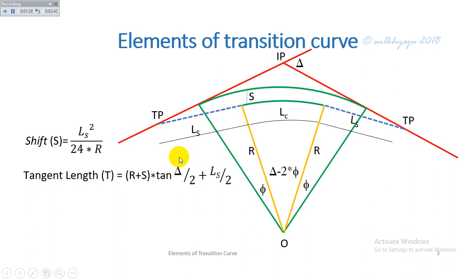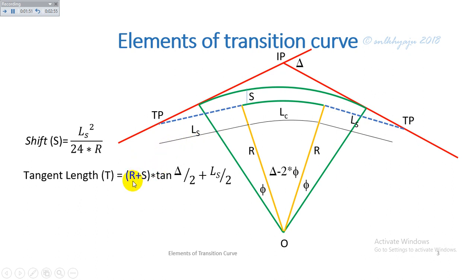Similarly, the tangent length T is the distance from the intersecting point IP to the tangent point. The tangent length T is given as: T = (R + S) tan(delta/2) + L_S / 2.